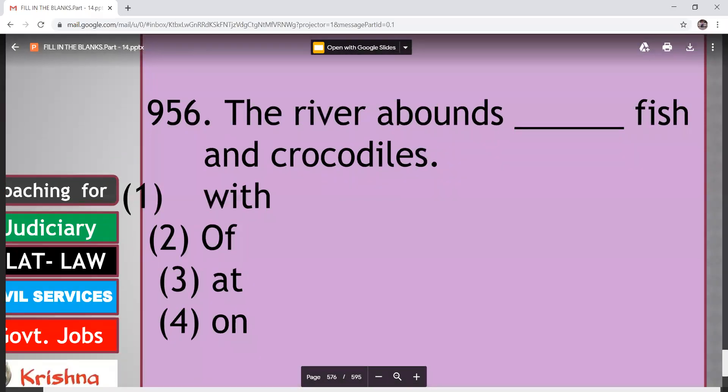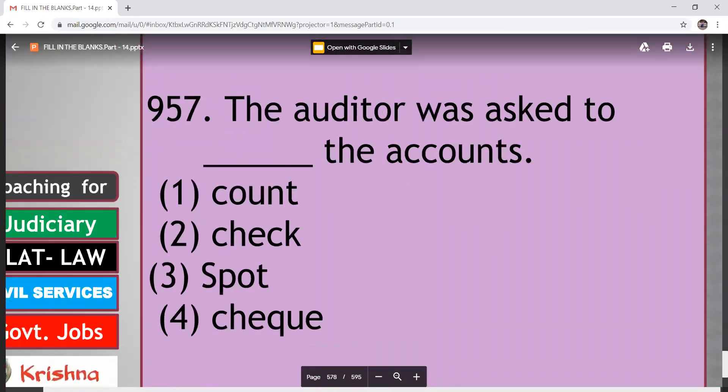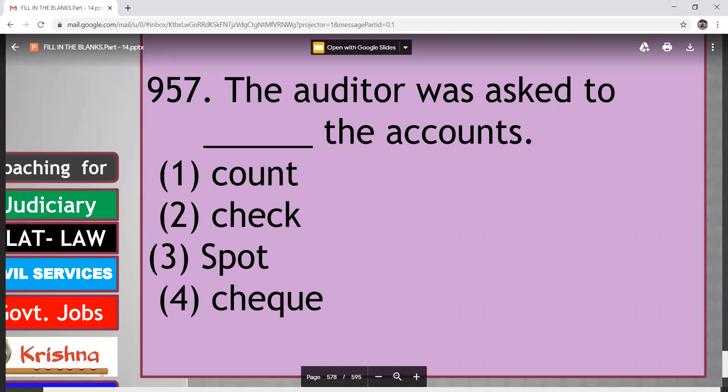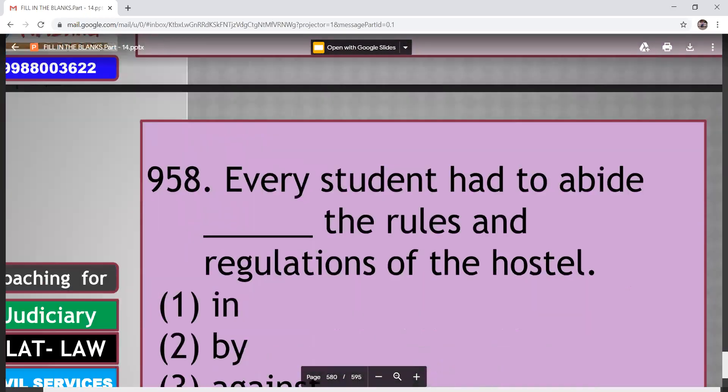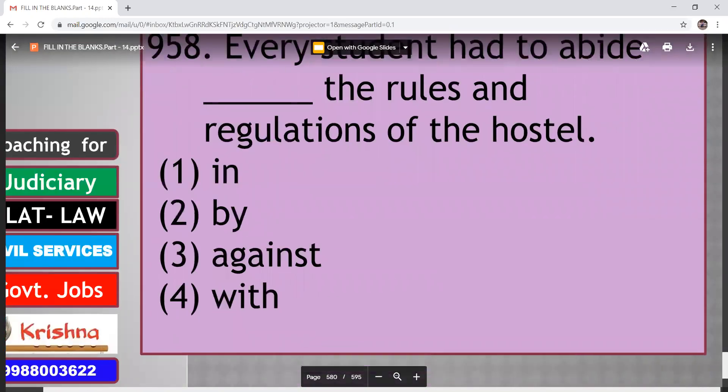River abounds dash fish and crocodiles. With, off, at, on. So here you have to say within something. The verb abound used here, that is within something. To exist in great number or quality. So here first option. River abounds with fish and crocodiles. Next. The auditor was asked to dash the accounts. Count, check, squad, check. So here second option. Auditor was asked to check the accounts. Next. Every student had to abide dash the rules and regulations of the hospital. In, by, against, with. So here abide by. That is second option.